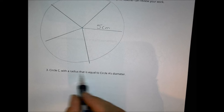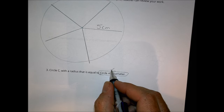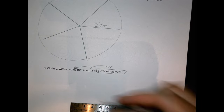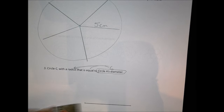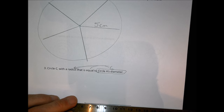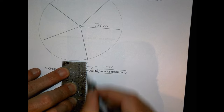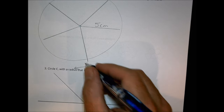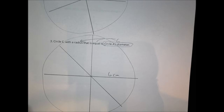For circle C, the radius is equal to circle A's diameter. Circle A's diameter was six, so now we make six the radius. I put a point for the middle of the circle and go out to six, then straight across to 12, and up to six in other directions. Connecting those dots gives a much larger circle — a radius of six centimeters and a diameter of twelve centimeters.